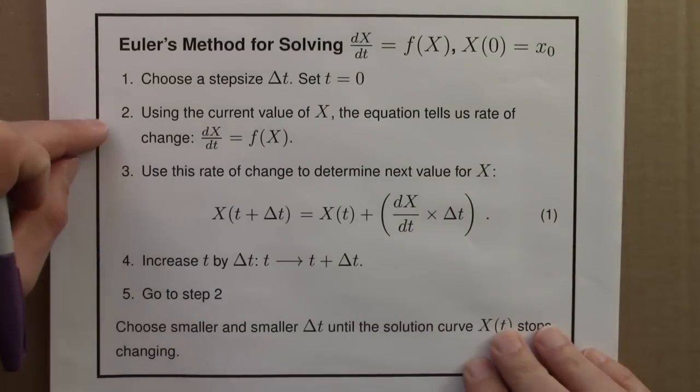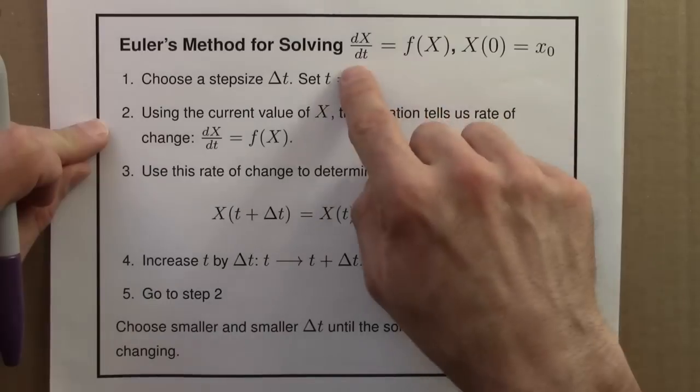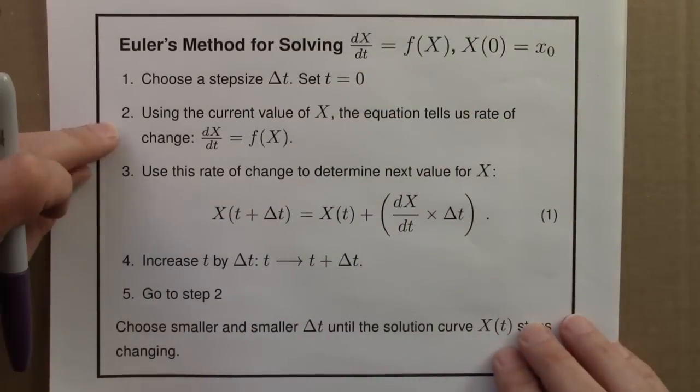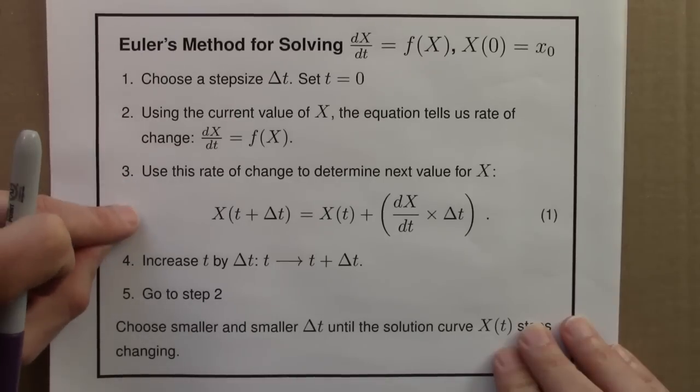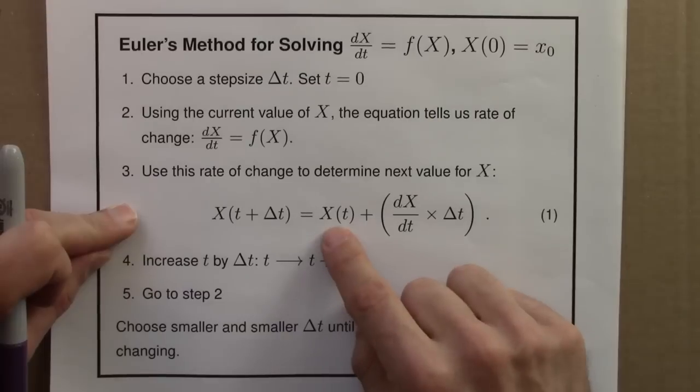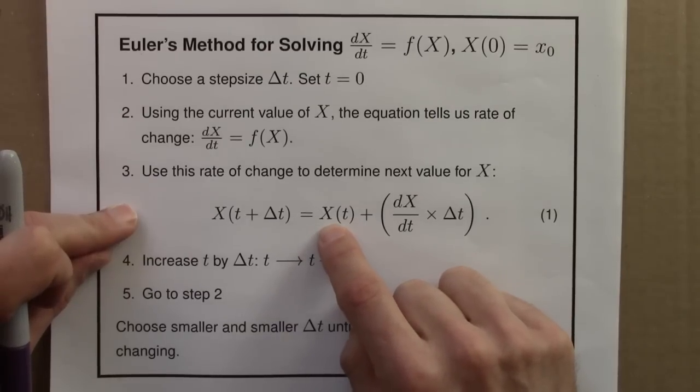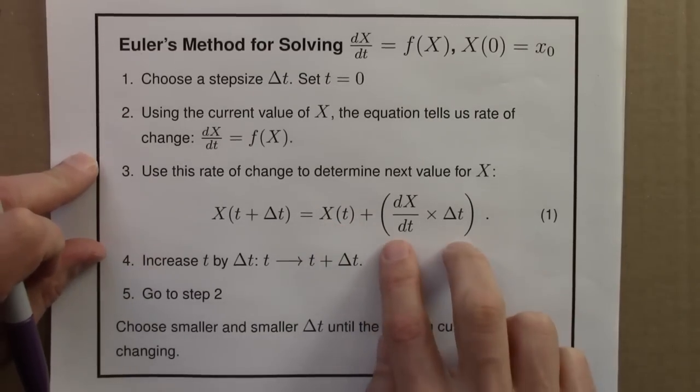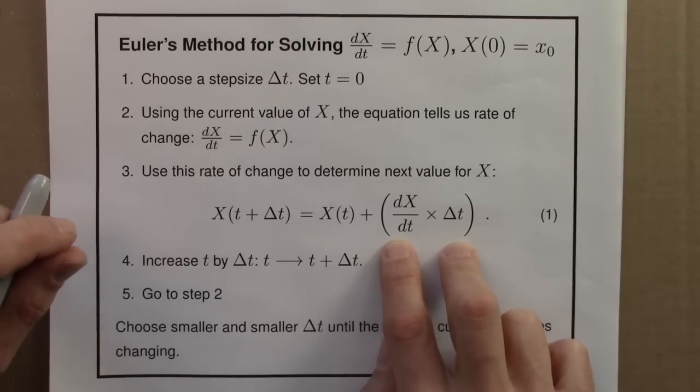So then using the current value of x, the equation, the differential equation, this function tells us the rate of change, so we know how fast x is changing. We then use this rate of change to determine the next value for x. This is the current value for x, this is how much x changes in a time interval delta t.